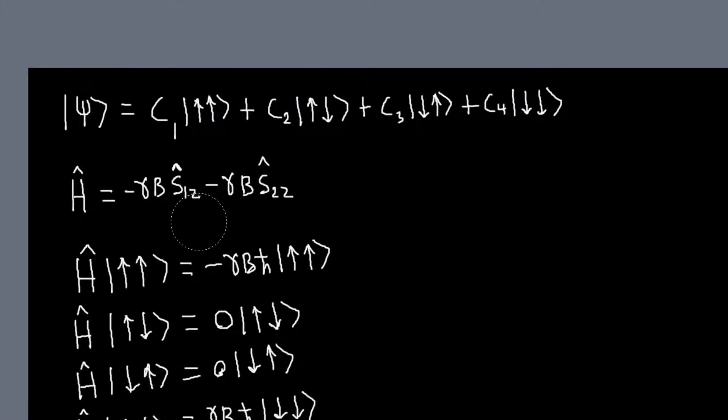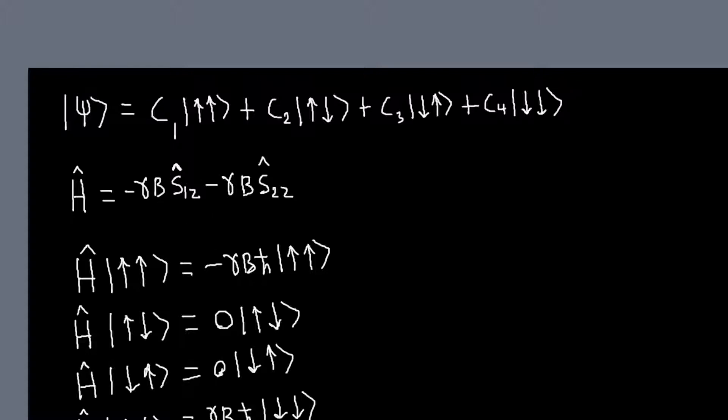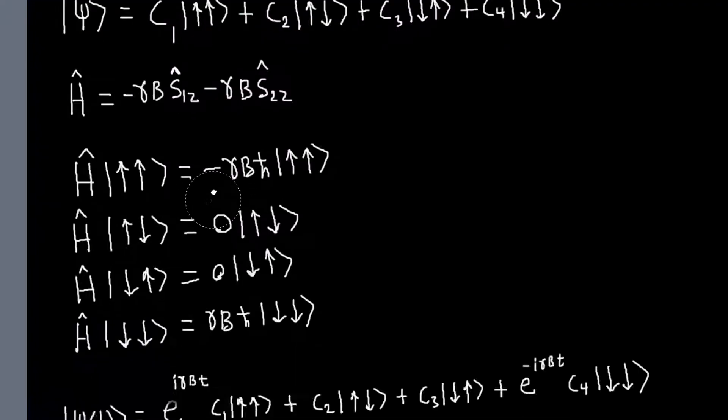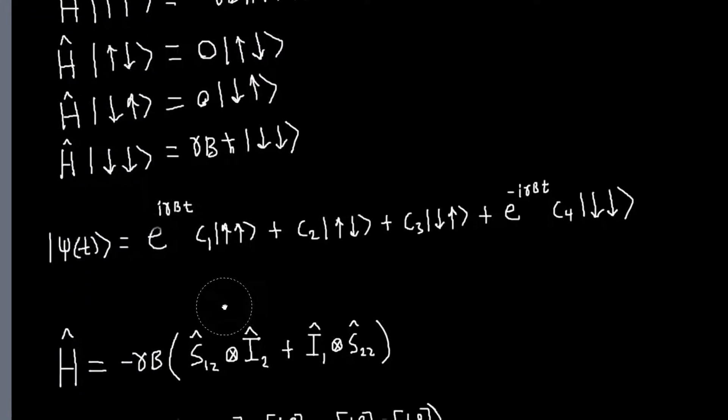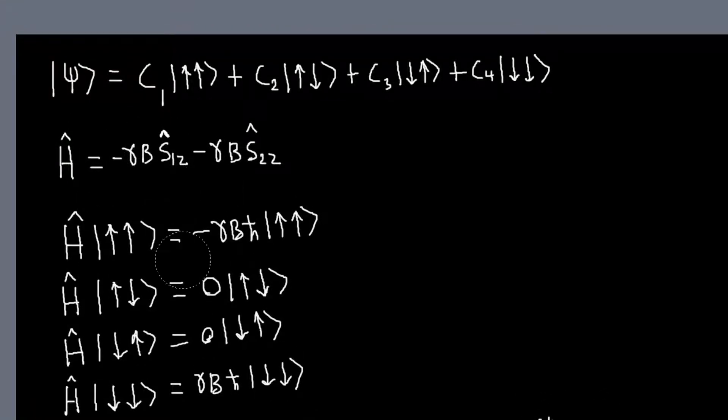So, whenever I have a one operator by itself, there's kind of an assumed Kronecker product with an identity operator. So, all of our operators should have basically one part that acts on the first state kets, or the state kets belonging to the first particle, and Kronecker product with a second operator that only acts on the second particle states.